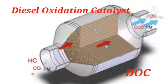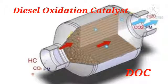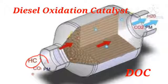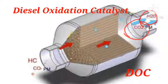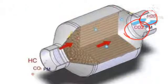Let's understand about DOC and DPF. The diesel oxidation catalyst (DOC) works exactly like a catalytic converter. It is mainly used for chemical reactions involving hydrocarbons — unburned fuel from combustion — and carbon monoxide, which are changed into water and carbon dioxide with the help of a catalyst and high oxidation.